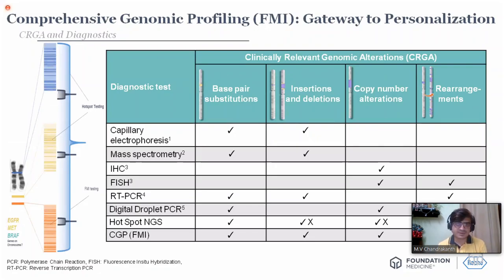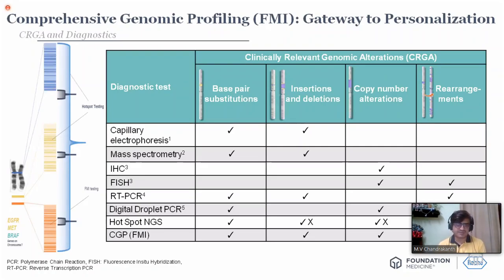Capillary electrophoresis picks up only base pair substitutions and insertions/deletions. Mass spectrometry is similar. IHC can pick up only copy number alterations — it won't detect an underlying genetic abnormality like BRAF V600E; you can only do ALK IHC or HER2 IHC for expressed proteins. FISH can detect only copy number — you can do FISH for HER2, but not for a V600E mutation or exon 19. PCR can identify a particular target like exon 19 or exon 21 deletion, but not copy number. So we don't do PCR for an ALK translocation or ROS mutation — we do FISH for them.